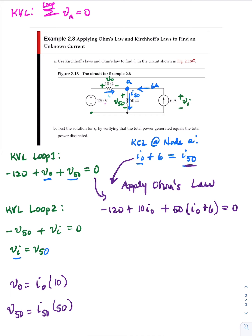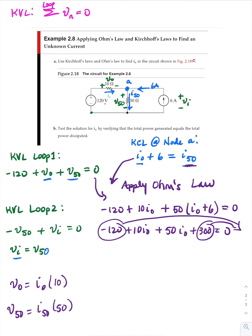Let's simplify: minus 120 plus 10 I sub zero plus 50 I sub zero plus 300 is equal to zero. Putting these two constant terms on the right, we have 60 I sub zero is equal to minus 180 — since 300 minus 120 is minus 180 — wait, 300 minus 120... So I sub zero is equal to minus 180 divided by 60, which is equal to minus three amps.